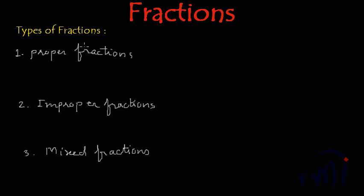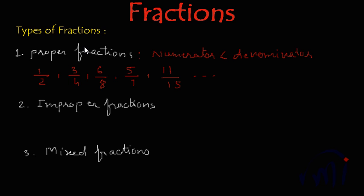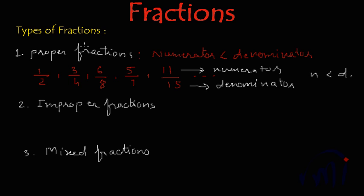What is a proper fraction? Proper fractions are fractions where the numerator is less than the denominator. That means fractions like 1/2, 3/4, 6/8, 5/7, or 11/15. The numerator is the number written over the bar, and the denominator is the number written below the bar. Where numerator is less than denominator, we call it proper fractions.